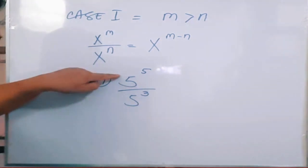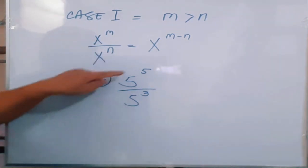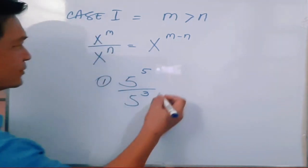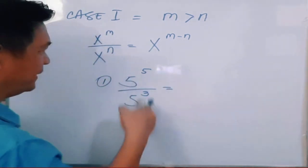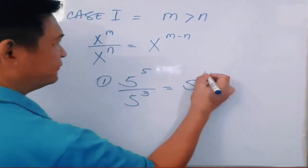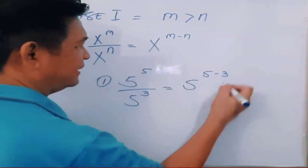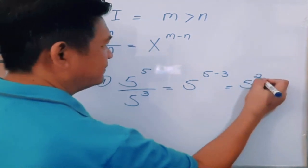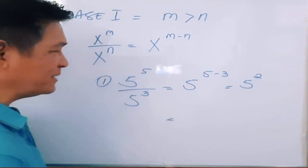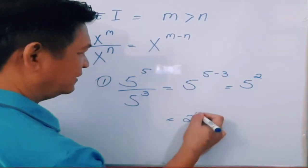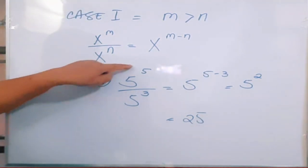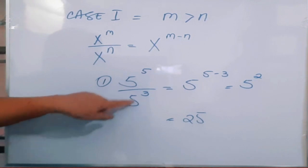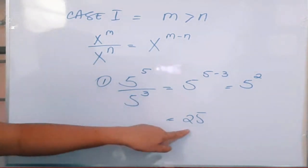5 is your common base, where 5 is your m and 3 is your n. So you keep the common base and subtract: 5 raised to 5 minus 3, and that is 5 raised to the second power, or 5 squared. 5 times 5 is 25. So 5 raised to the fifth power over 5 raised to the third power is equal to 25.